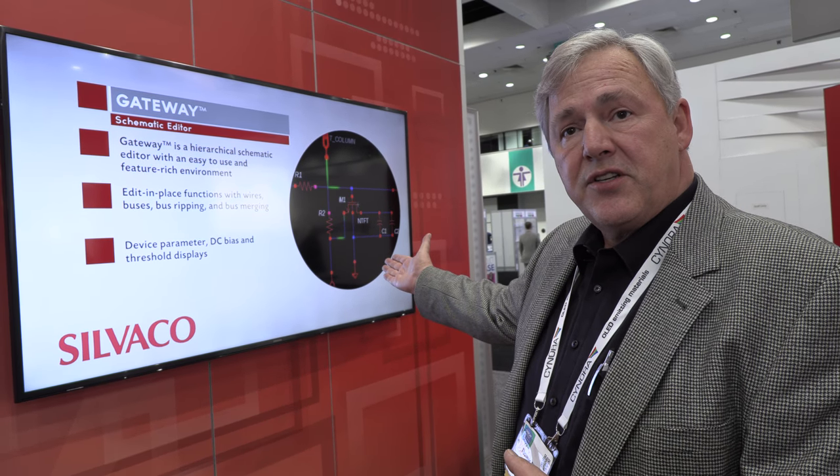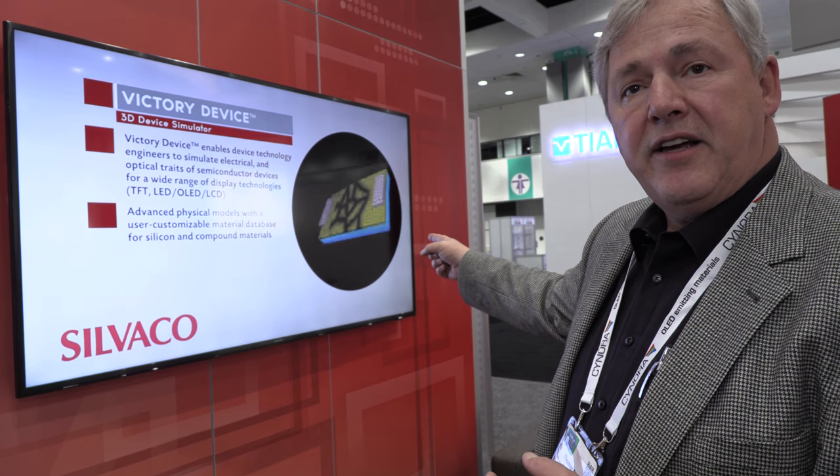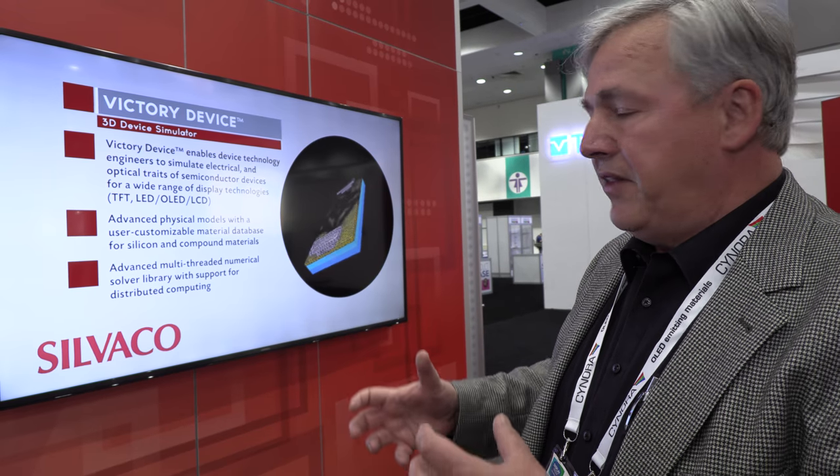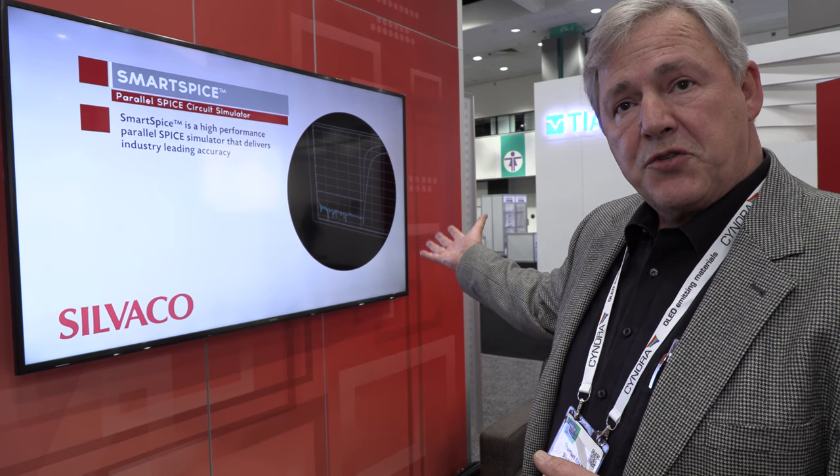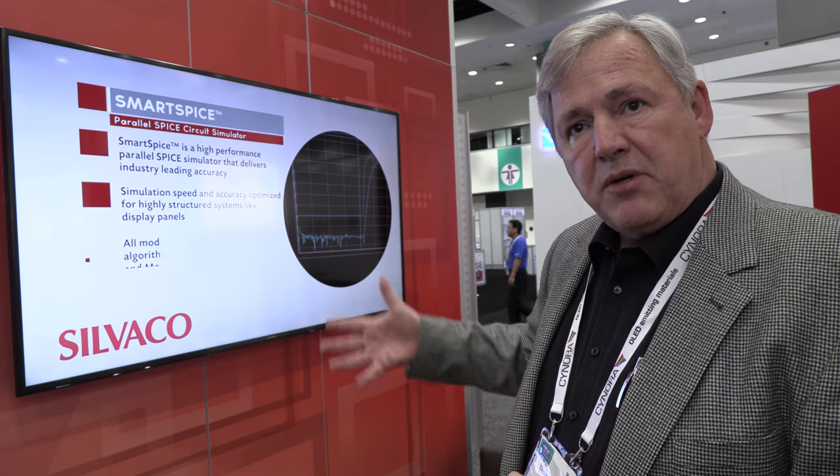Gateway is our schematic editor. Instead of drawing all the pixels by hand, you have a hierarchical approach — you draw the transistors and resistors for one pixel and then build a hierarchical system to generate your netlist. Victory device: what you see here is one pixel of an organic LED, where engineers can do verification of the optical and electrical traits of each individual pixel. Utmost is a tool which allows you to extract parameters either from measured data from an actual piece of silicon or from IV curves out of TCAD. Then it goes into the circuit simulation, which is Smart Spice, where you can do all your electrical verification.